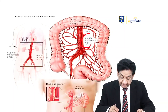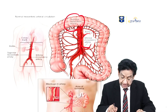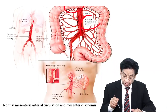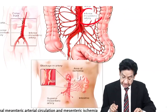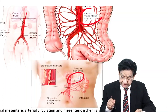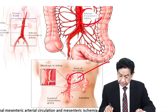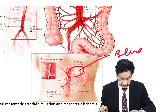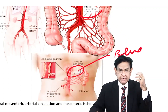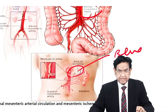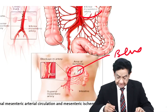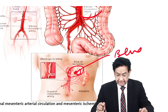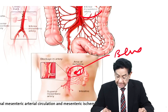The aorta gives rise to the superior mesenteric artery and inferior mesenteric artery. When there is a blockage in the artery, the downstream area becomes ischemic — shown as blue or cyanosed — while normal areas remain red. If the ischemia is not relieved, that area may get infarcted, meaning the intestine becomes dead in that region.